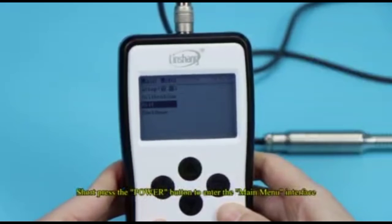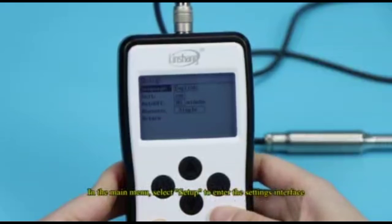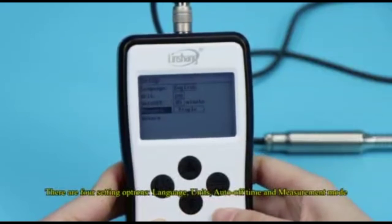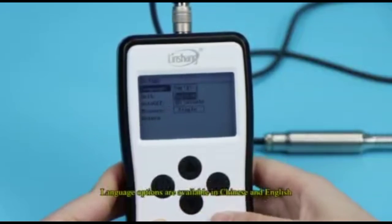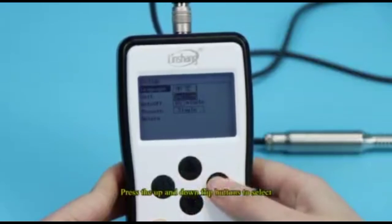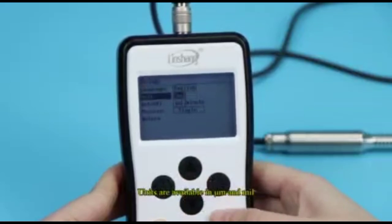Short press the power button to enter the main menu interface. In the main menu, select settings to enter the settings interface. There are four setting options: language, units, auto-off time and measurement mode. Language options are available in Chinese and English. Press the up and down flip buttons to select. Back button for confirmation. Units are available.